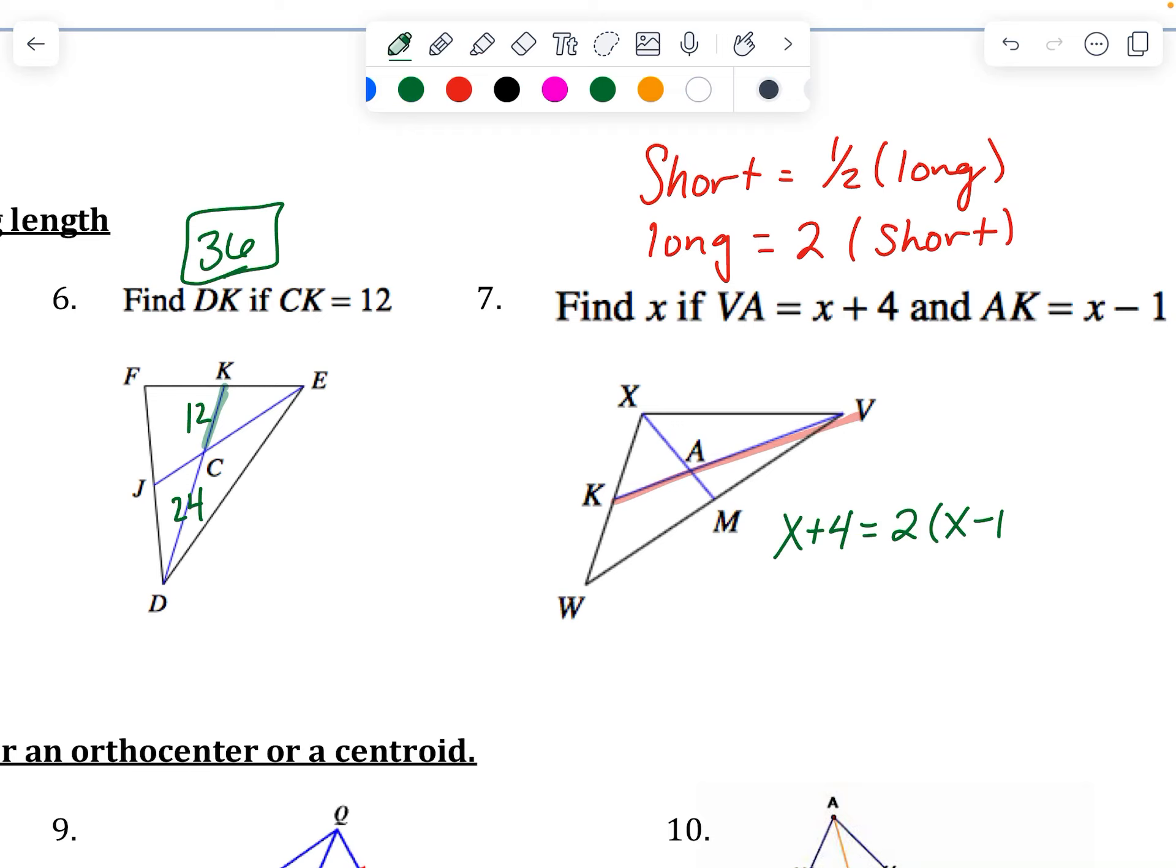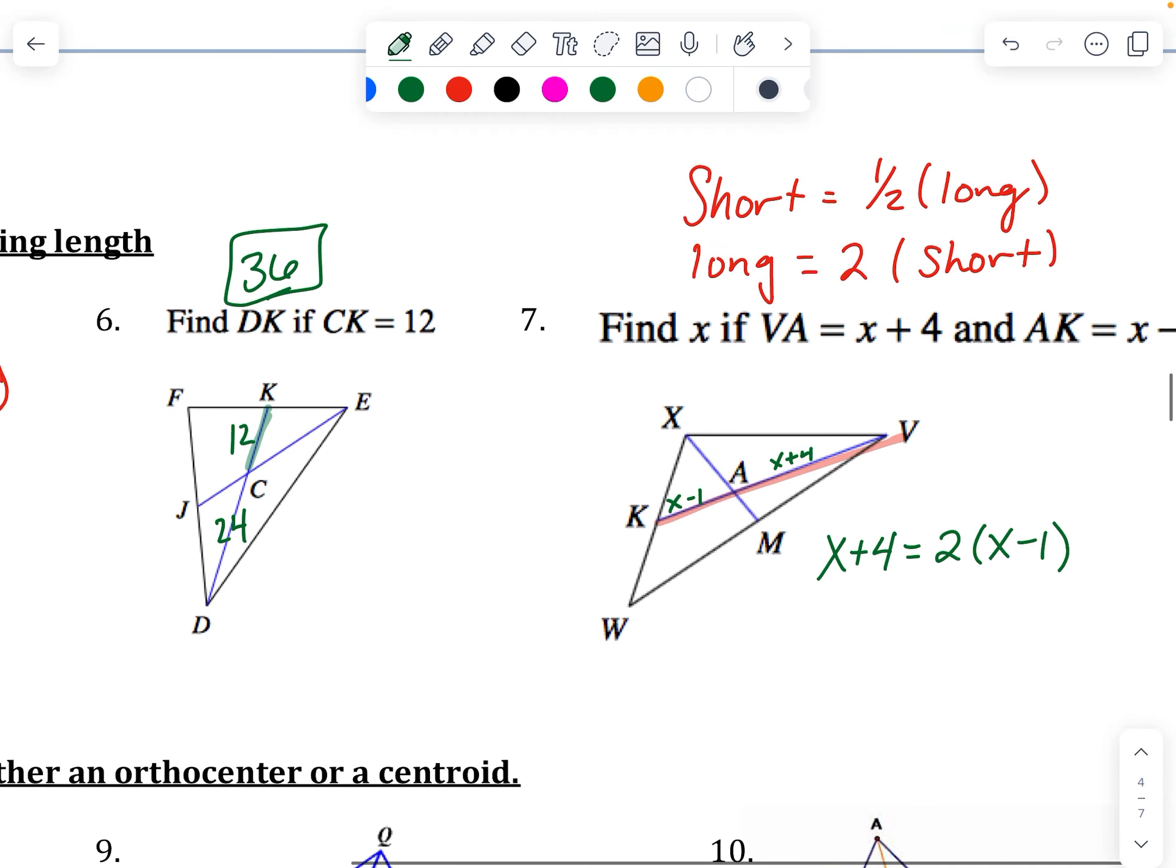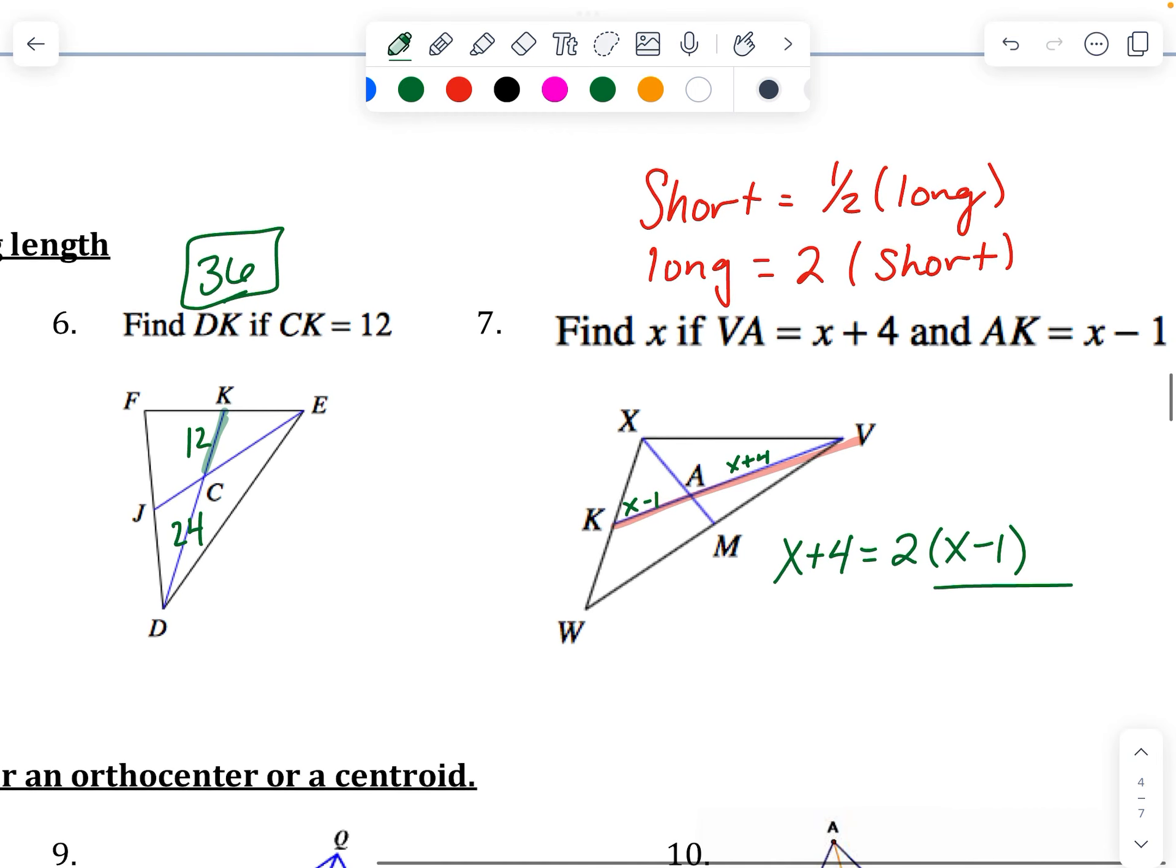VA is the long part. That is X plus 4. This is X minus 1. And the long part is 2 times the short part. So I can say X plus 4 equals 2X minus 2, or X equals 6.